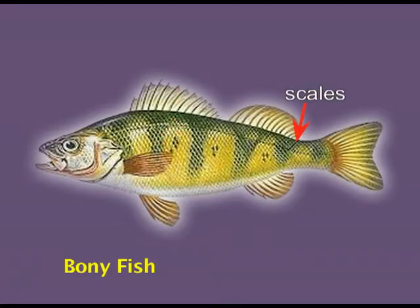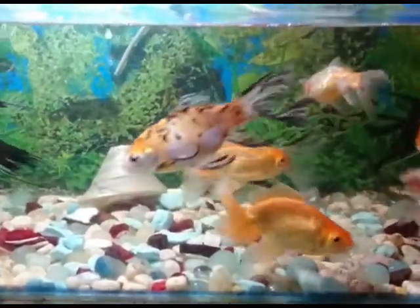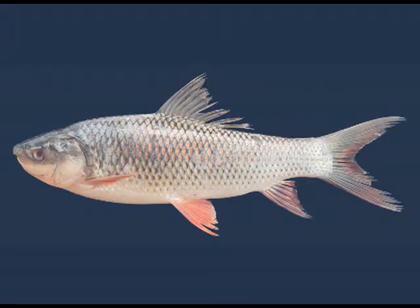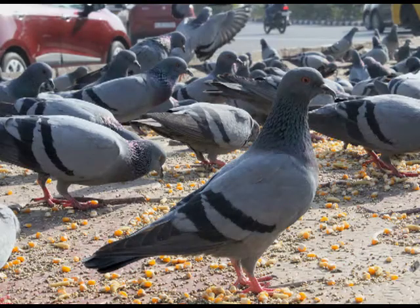Fish have fins that help them move in water, and scales that protect the body from entry and exit of water. They may have a terminal or a ventral mouth. Fishes may be cartilaginous or bony depending upon the skeleton. An example of a bony fish is Labeo; an example of a cartilaginous fish is Scoliodon.